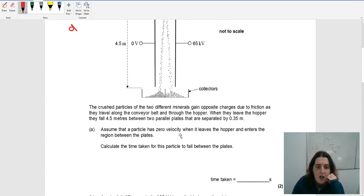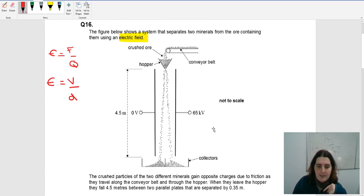The crushed particles of two different materials gain opposite charges due to friction as they travel down the conveyor belt. When they leave the hopper, they fall four and a half meters between two parallel plates separated by 0.35 meters. Assuming the particle has zero velocity when it leaves the hopper, calculate the time taken to fall between the plates.